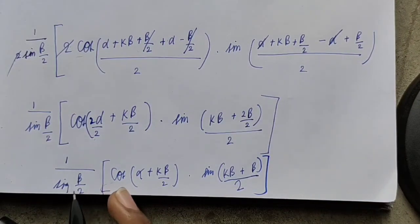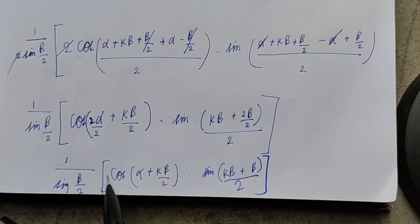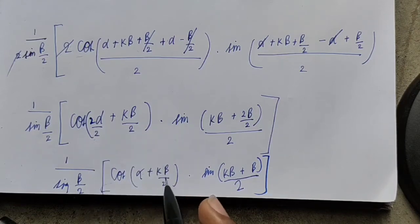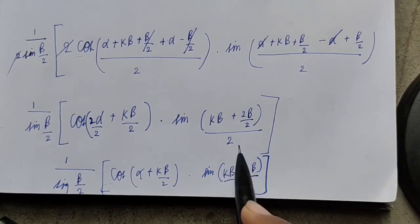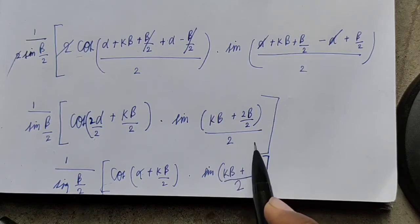We get (1/sin(β/2)) · cos(α + kβ/2) · sin(kβ/2 + β/2), which simplifies the expression to the required form, completing the proof that P(k+1) is true.